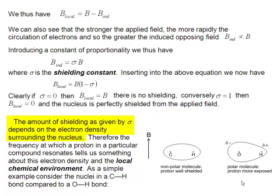The reason why this is important is that sigma is clearly a function of the electron density. So we've got a probe of the electron density around each individual nucleus in our molecule. And that's what gives NMR its strength. So let's look at a very simple example of that.